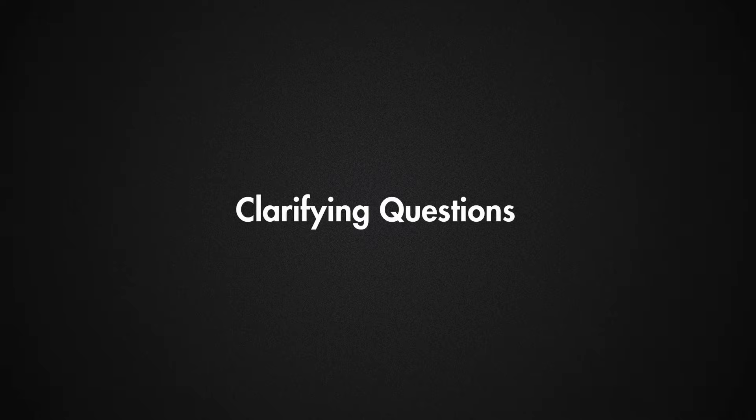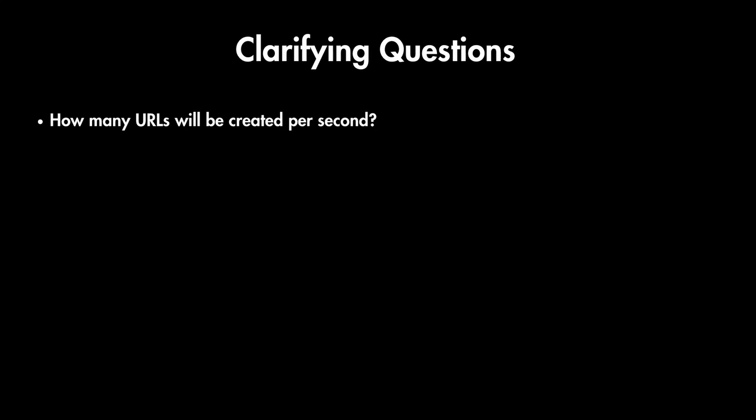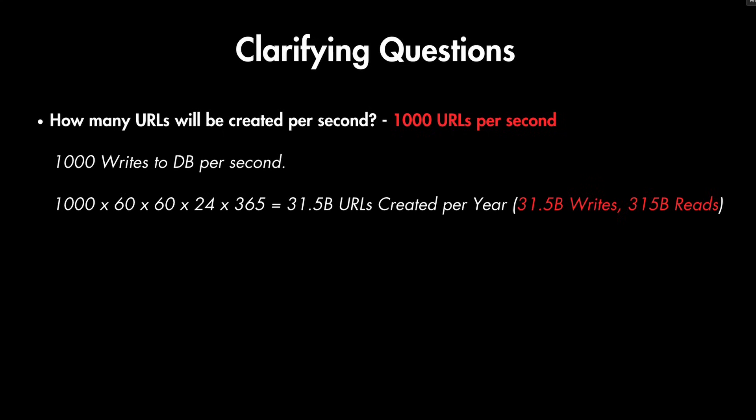Some clarifying questions we might ask the interviewer: first, how many URLs will be created per second? Let's say the answer is 1000 URLs per second. This means we'll be getting 1000 writes to our database per second, and every year we will have 31.5 billion URLs created in our system.